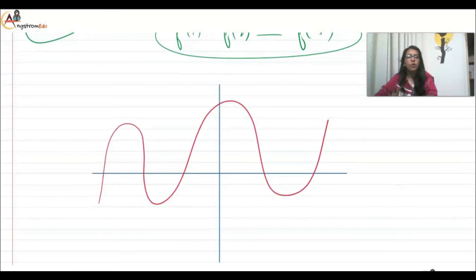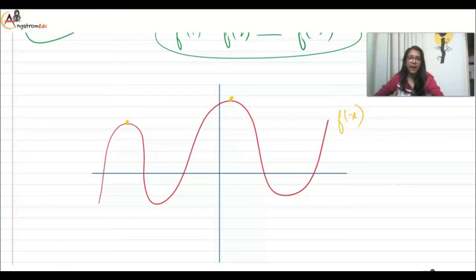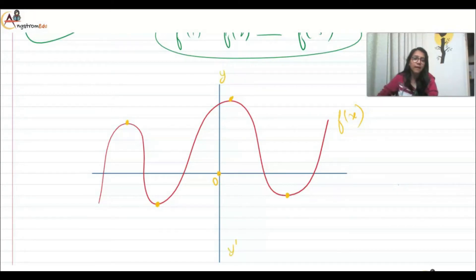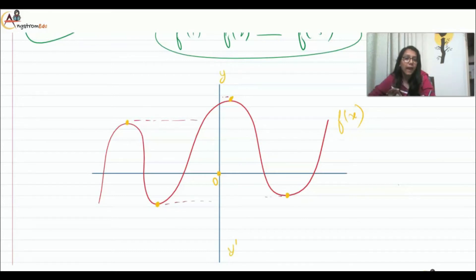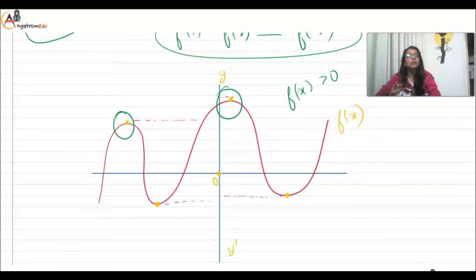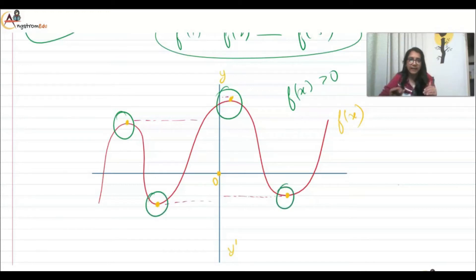Let us draw a graph to understand this better. We have a graph with a function f(x). I can see the maximum values at the humps and the minimum values at the troughs. f(x) is positive on the top side and negative on the downward side, corresponding to the positive and negative y-axis. Drawing dotted lines to the axes, these two peak points are local maxima points, and the function values around them are local maxima values.